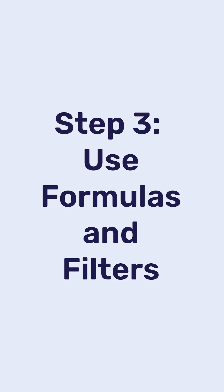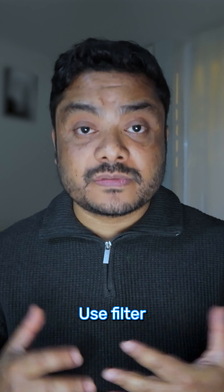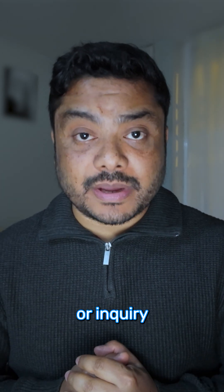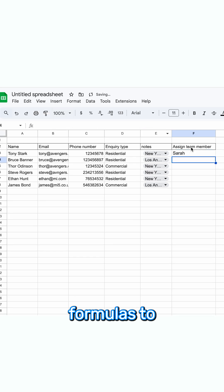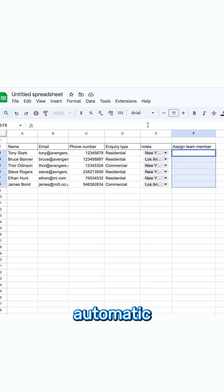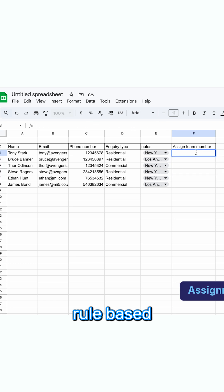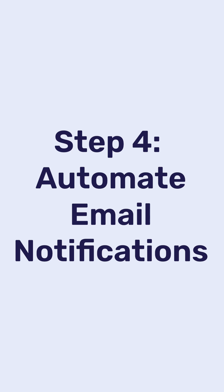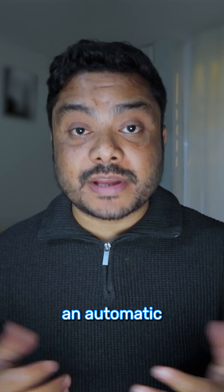Step 3: Use formulas and filters in your spreadsheet. Use filters to sort leads by location or inquiry type, then add formulas to set up automatic rule-based lead distribution.